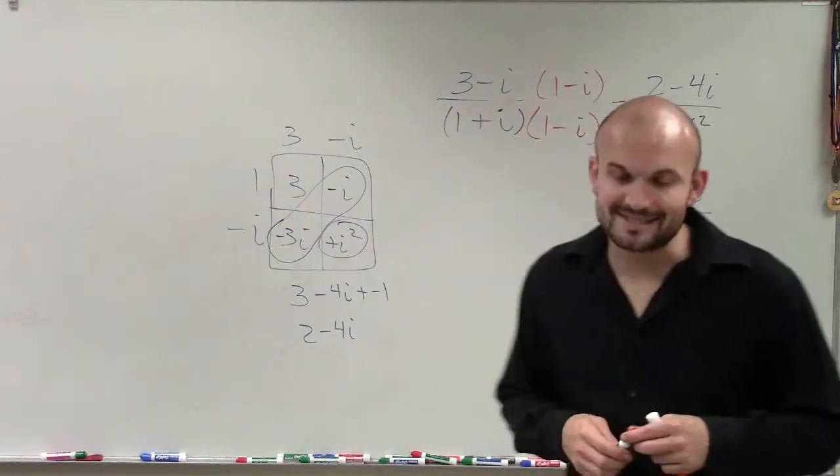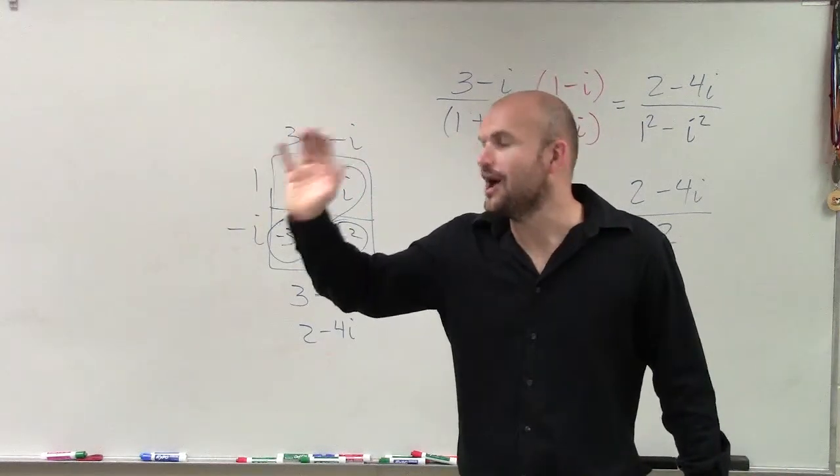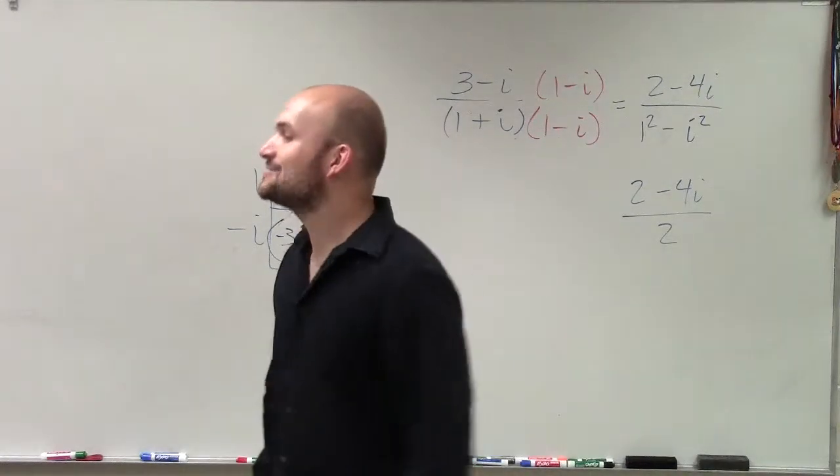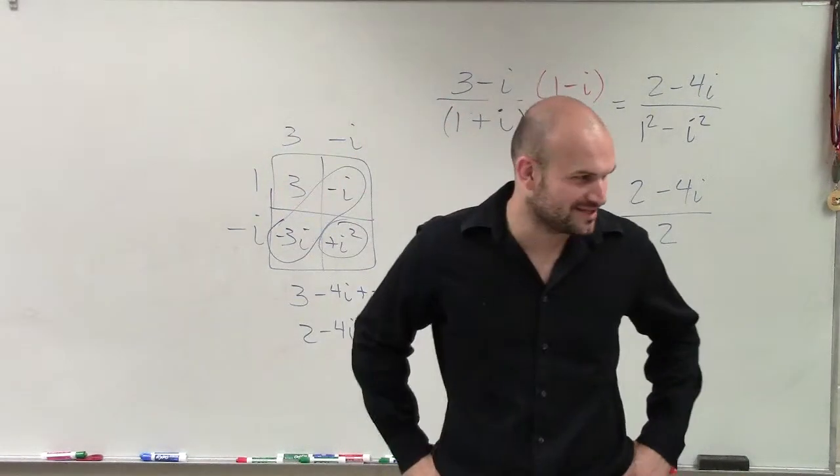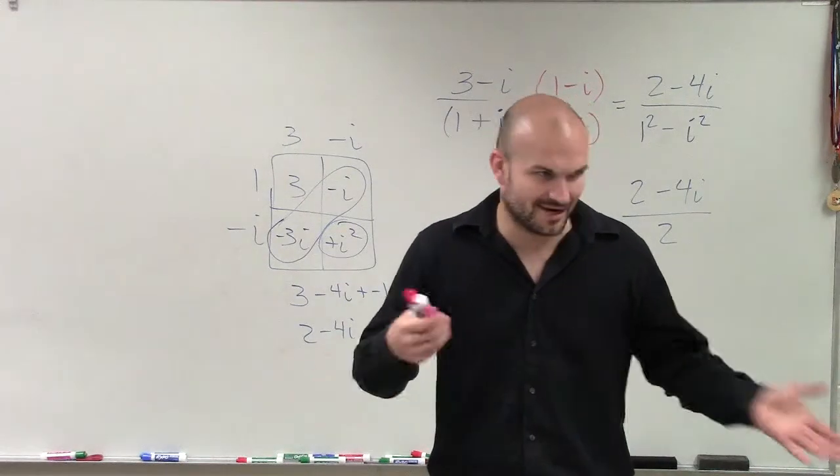Now, I said that complex numbers come in the form of? A minus bi. So remember, it's c plus di, or what was it? A plus bi. Now, could it be c plus di? Right? It's just variable.